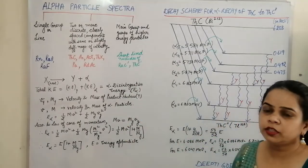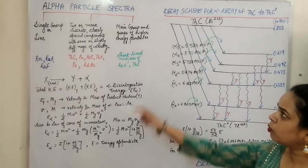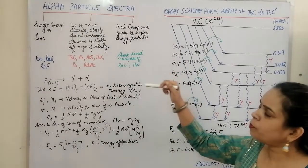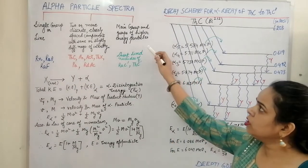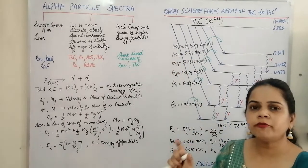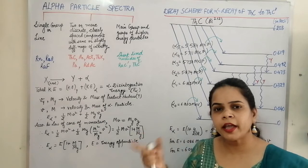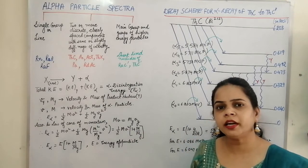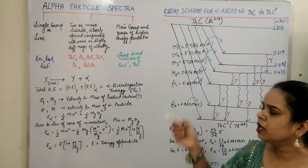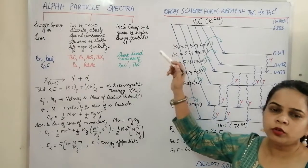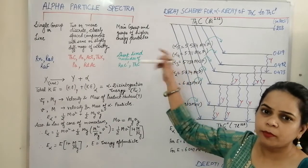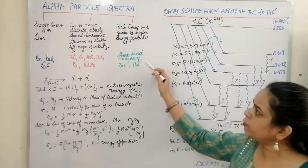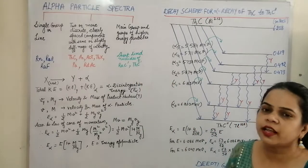The third type of alpha particle spectra consisted of a main group and a group of higher energy particles. The main group had alpha particles of around 8 MeV, but a higher order alpha particle of about 10 MeV was also emitted. However, the number of higher energy alpha particles was very, very small in comparison to the main group. Examples of this type of spectra were the short-lived nuclei radium C dash and thorium C dash.